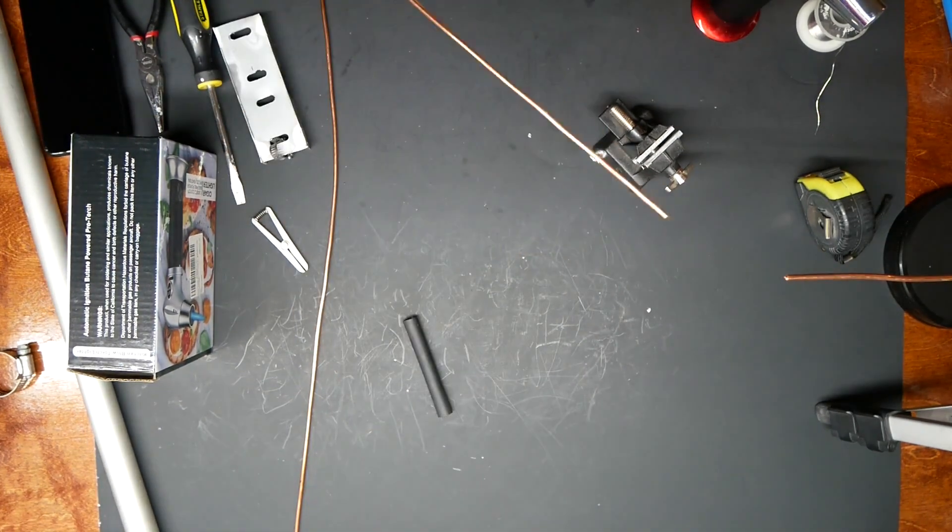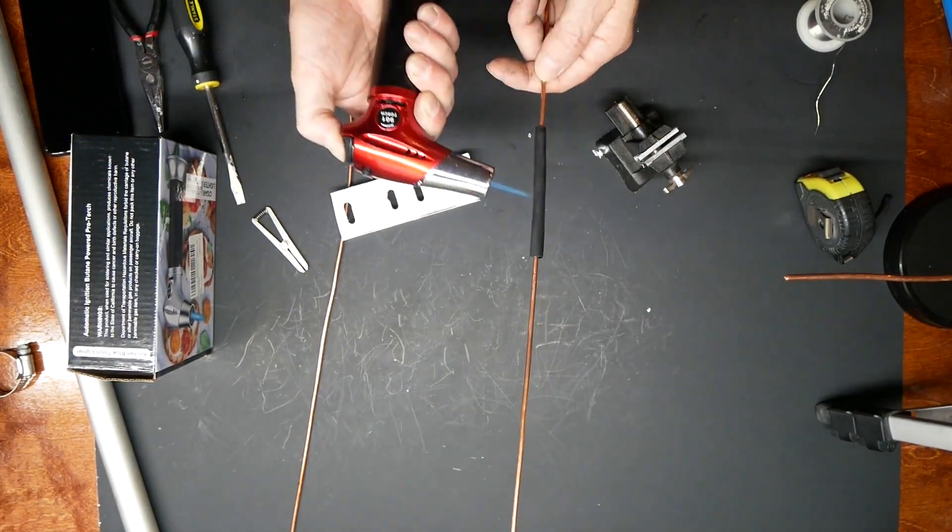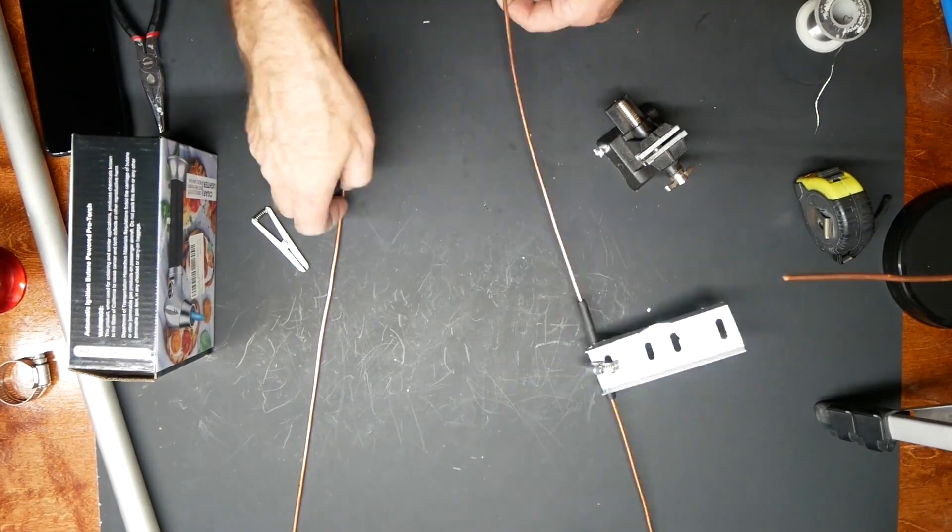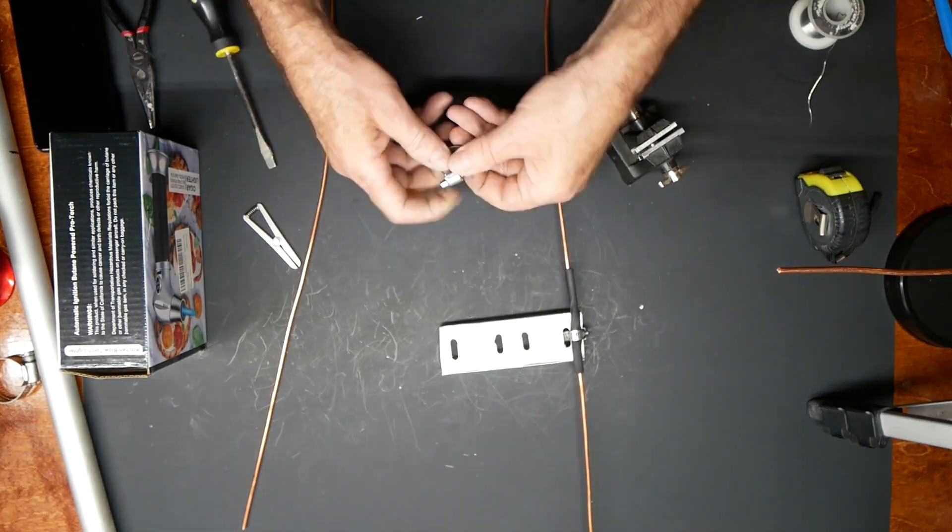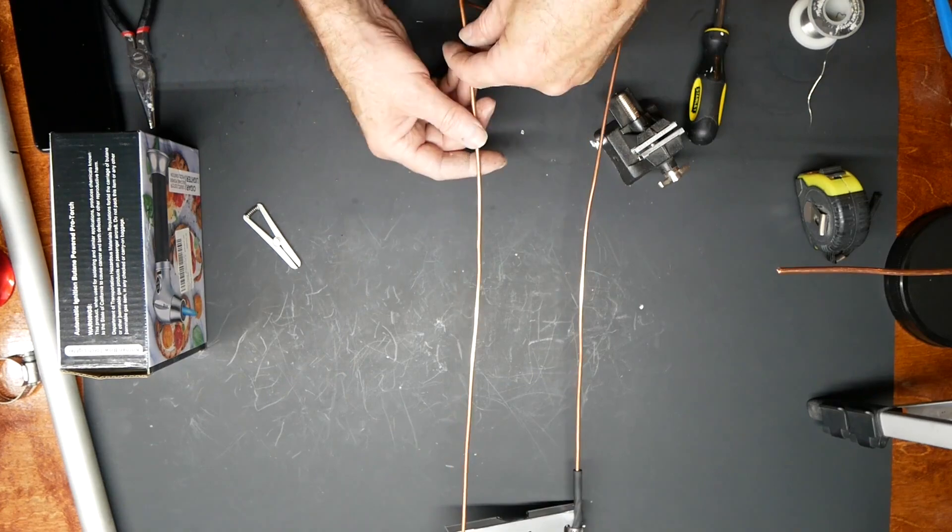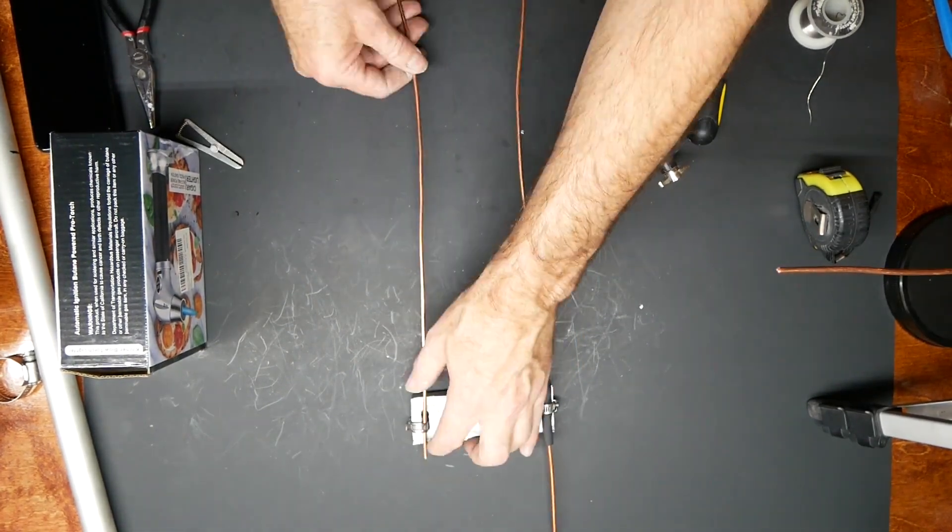But GMRS is higher than that. GMRS is 462-ish to 467-ish megahertz. Now I know it's possible to have an antenna that's resonant on both bands, because both of the mobile antennas that I've run are resonant on both 2 meters and GMRS. So I know it's possible.